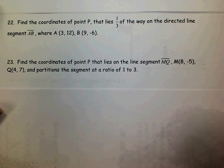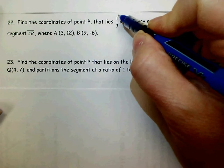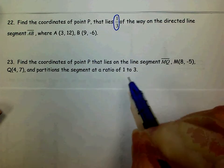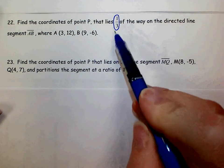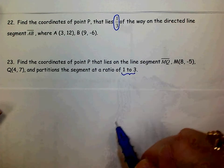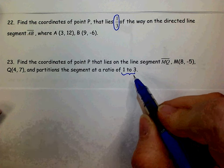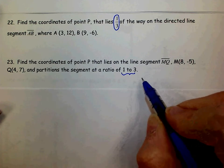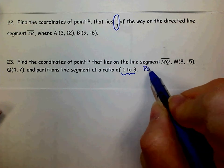First of all, I wanted you to pay attention to when you're given the fraction and when you have to come up with the fraction. On number 22, we're told the fraction, but on number 23, we're given the ratio. Remember, when you're given the ratio, to convert that into the fractional part of that segment you want, you're going to put it as part over whole.